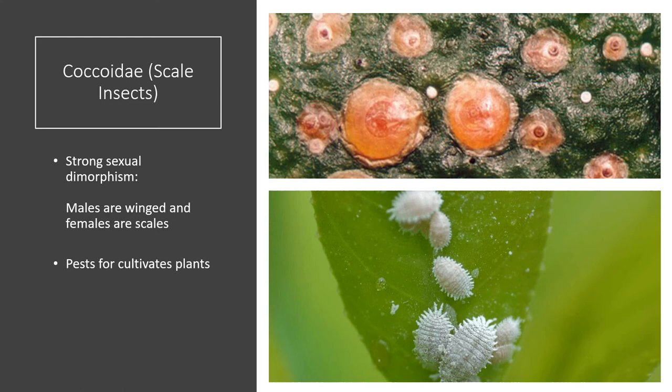Coccidae, aka scale insects — a family you've probably never seen but they're more common in nature than you think. Next time you're out birding or on a hike, look for them on twigs or leaves. The top picture shows a female scale insect which is permanently bound to a plant. The bottom picture shows a mealybug female which can walk around. All scale insects have strong sexual dimorphism — males are typically winged and females are scales. These are pests for cultivated plants.